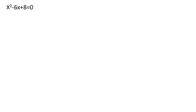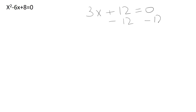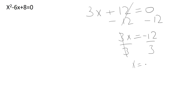We're going to begin with a really simple equation that's not a quadratic — just a simple equation like 3x plus 12 is equal to 0. That equation is very simple to solve using basic algebra. The objective is to isolate the x: we subtract 12 from both sides, left with 3x equals negative 12, then divide both sides by 3 and we get x equals negative 4.